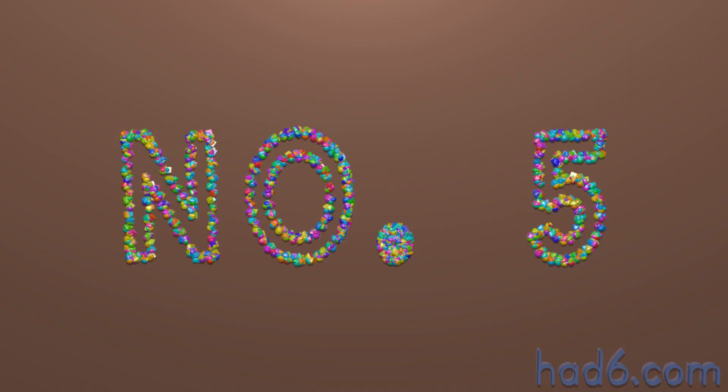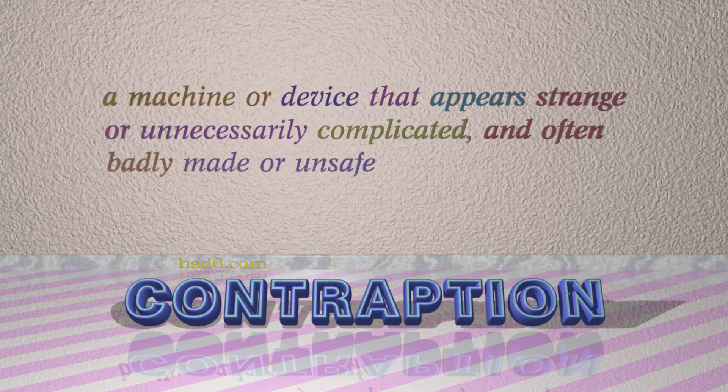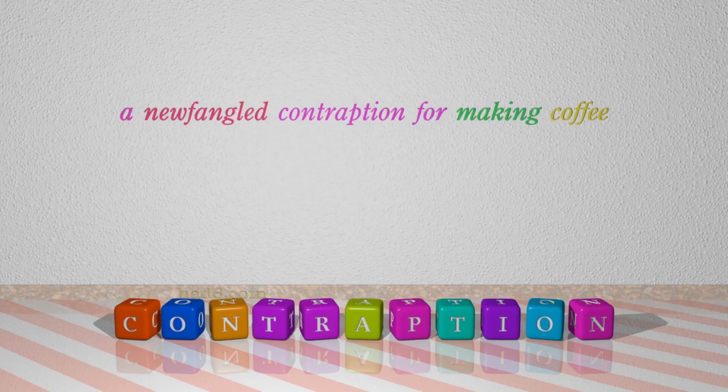Number 5: Contraption — which means a machine or device that appears strange or unnecessarily complicated, and often badly made or unsafe. For example: a newfangled contraption for making coffee.